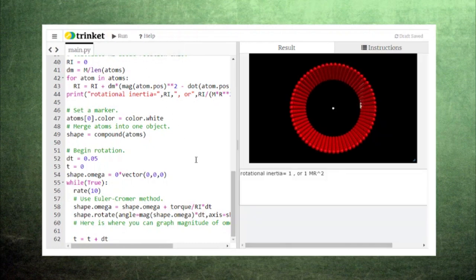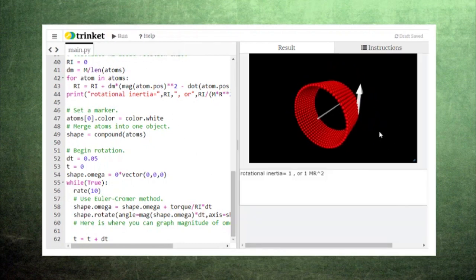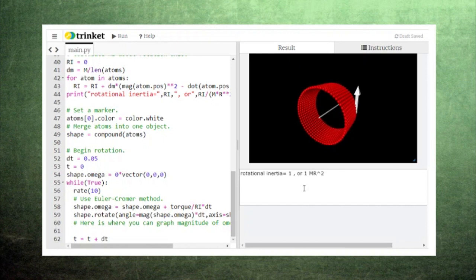When we run the code, we see that we get a value of mass times the radius squared for the rotational inertia, just like the table said we would. In the animation, we can see the cylinder increase its rotational velocity under the influence of the applied force.